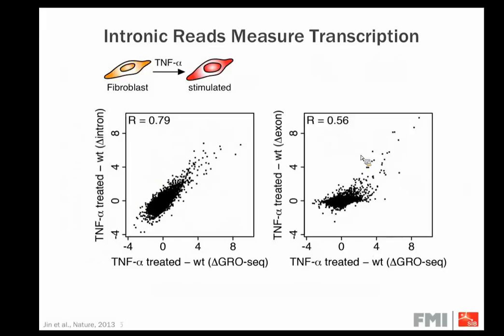A third example: fibroblasts stimulated with TNF-alpha, where GRO-seq was performed. We compared the change of GRO-seq — which directly measures transcription rate changes — with the intronic changes and found a very nice correlation. The correlation is less prominent when comparing GRO-seq to exonic changes. Taken together, these support the fact that you can really see transcription rate changes by doing this exon versus intron analysis.